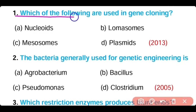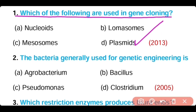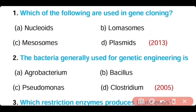Question 1: Which of the following are used in gene cloning? Options: Nucleid, Lomasome, Mesosome, Plasmid. Option D is correct. Plasmids are circular double-stranded DNA molecules that are used as a vector in gene cloning.